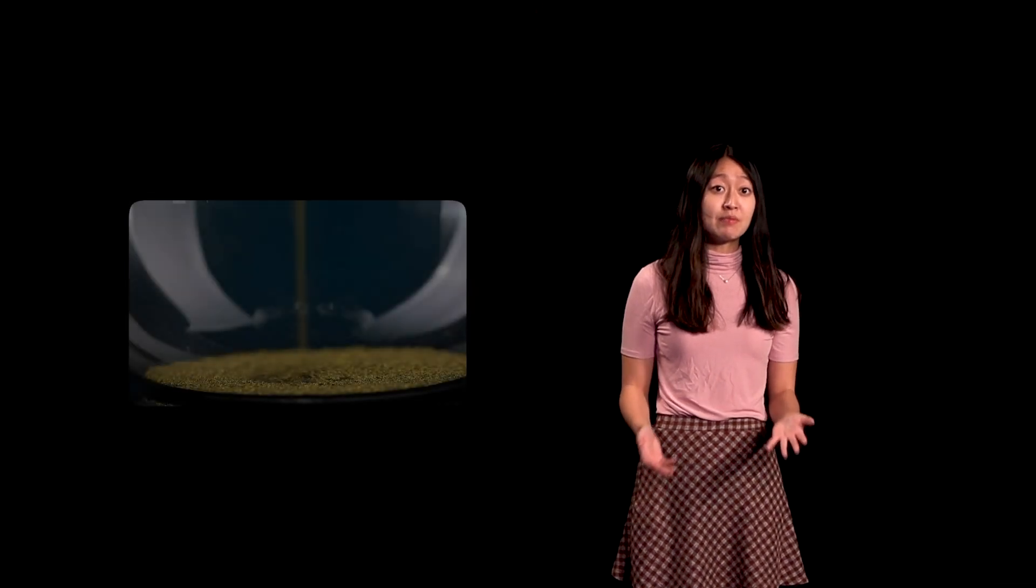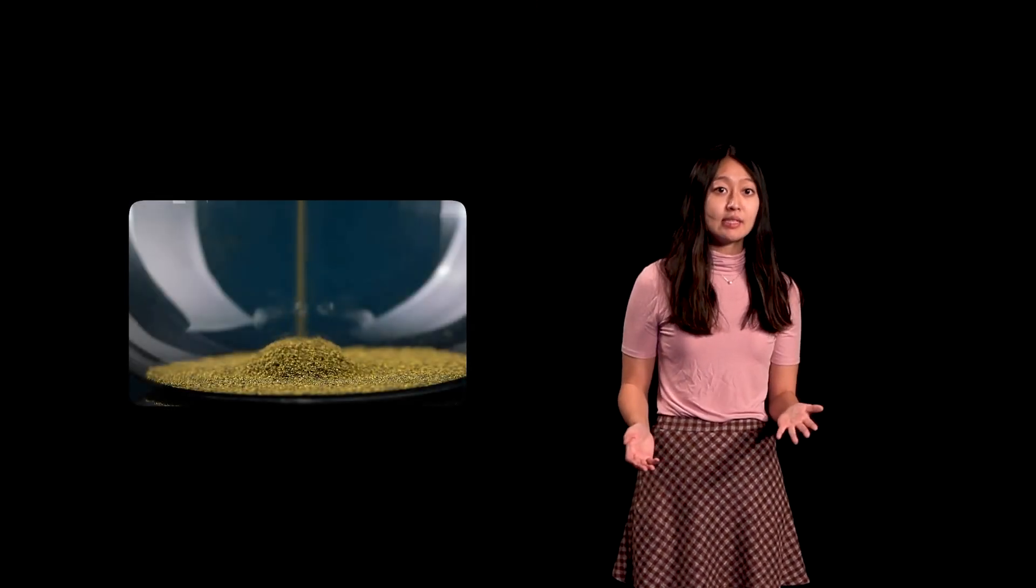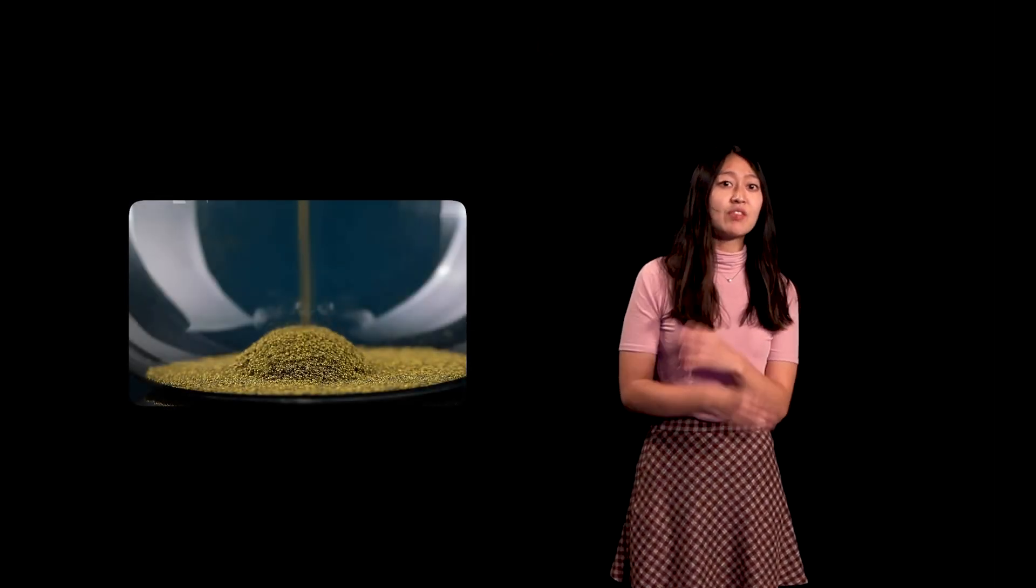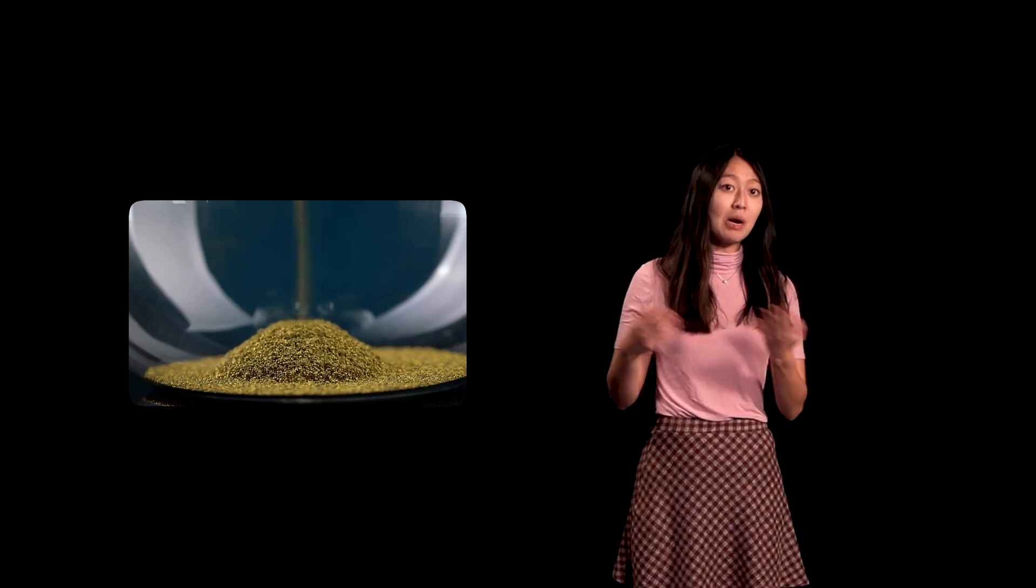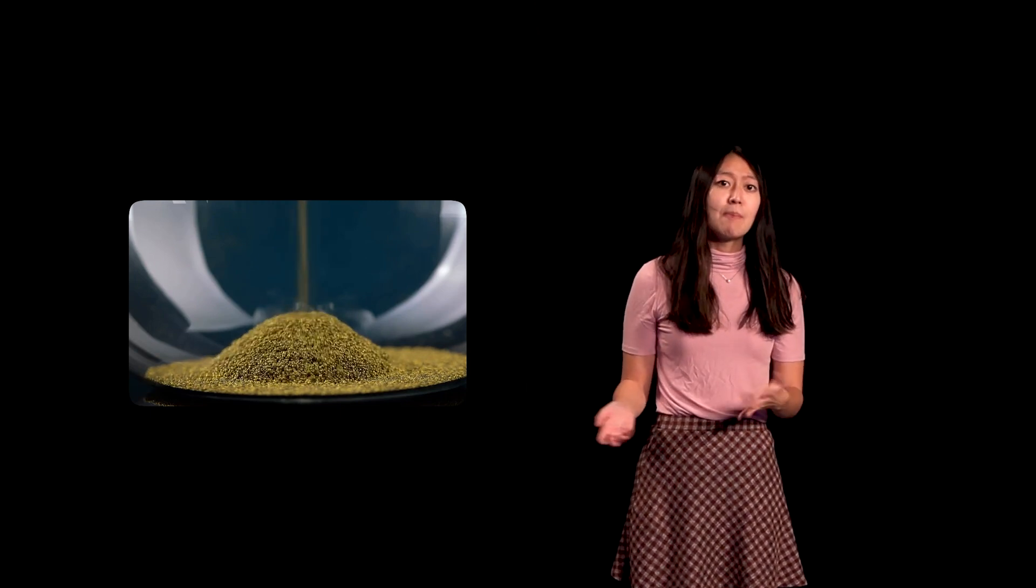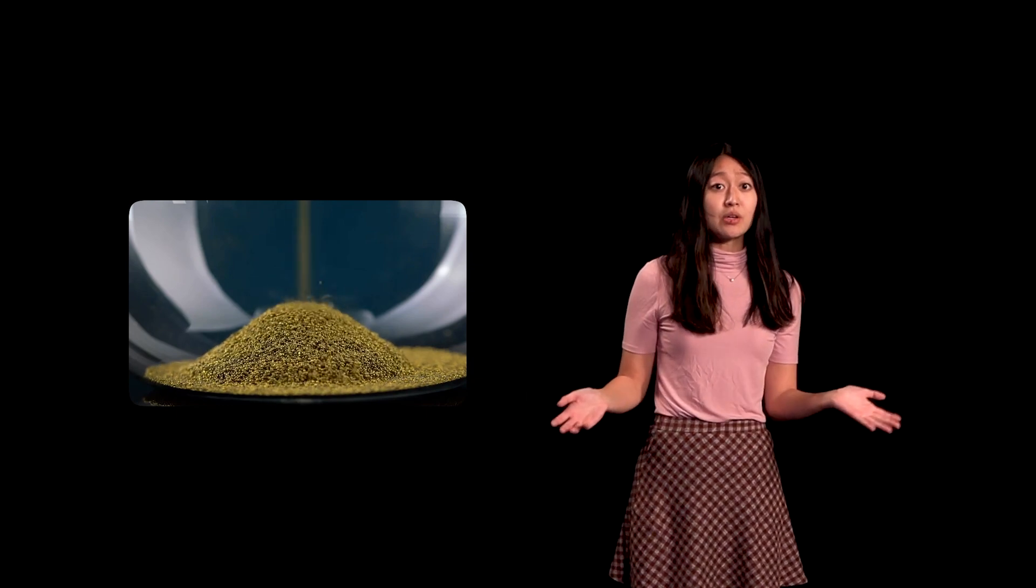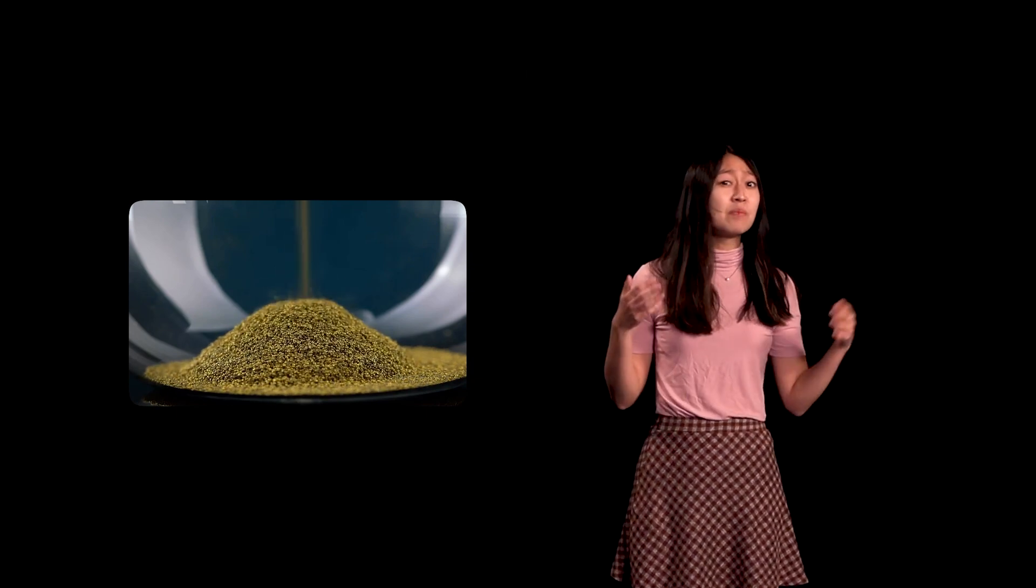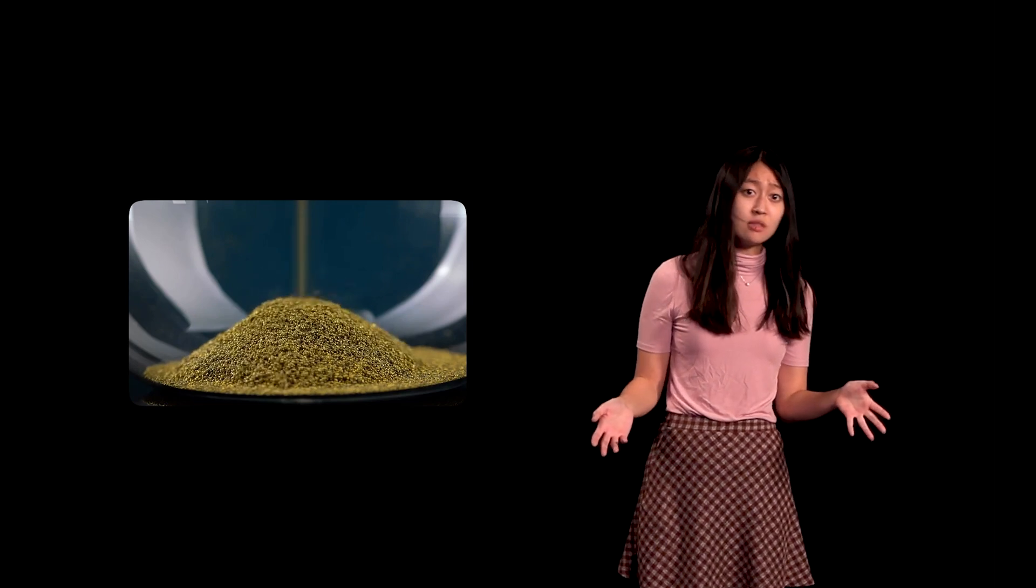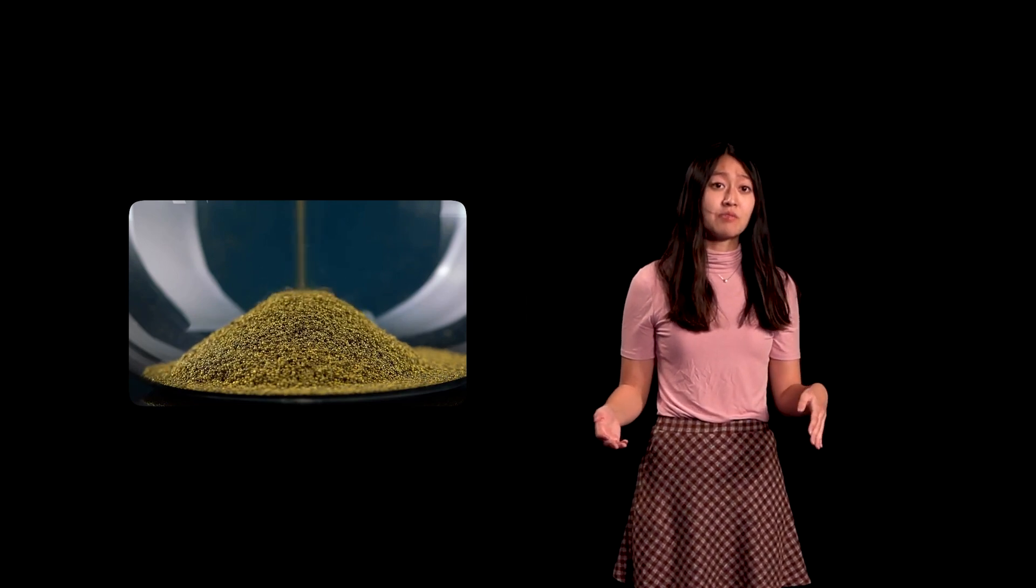Consider the famous example of a heap of sand. How many grains of sand does it take to form a heap? If we have a thousand grains of sand in a pile, we would probably call that a heap of sand. Let's say we start taking away grains of sand one by one. When is it no longer a heap? When there are only five, three, two grains of sand? This is an example of the vagueness of the word heap.